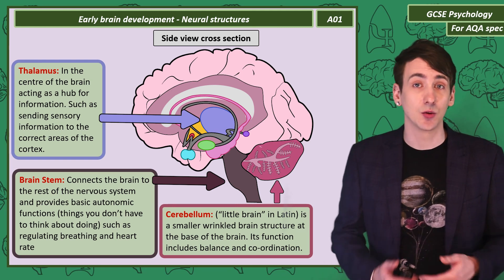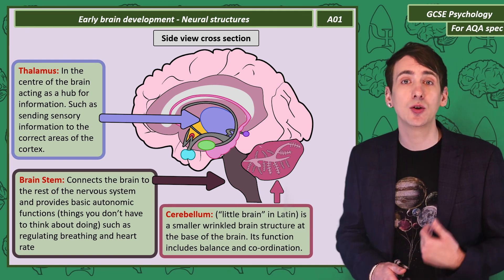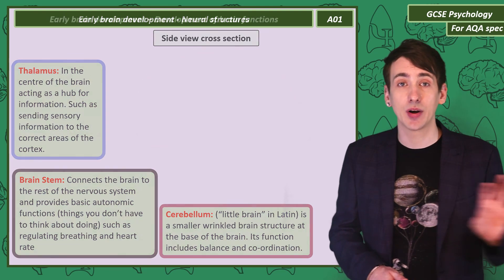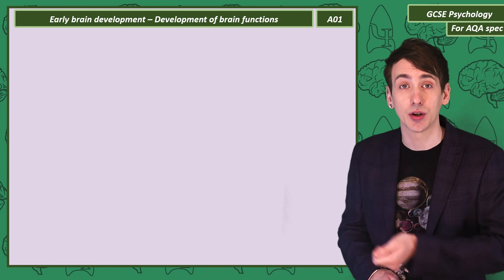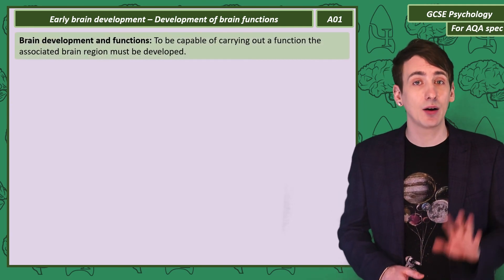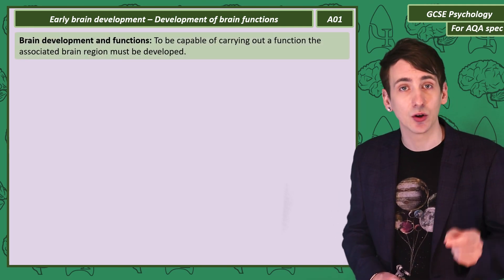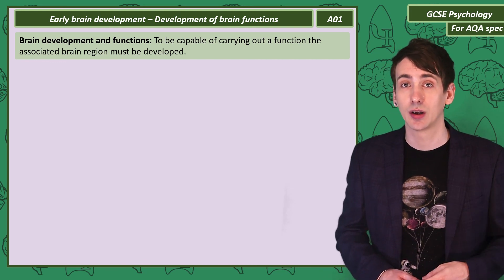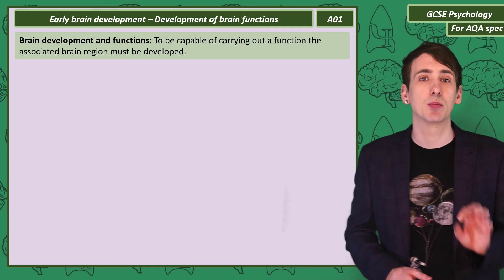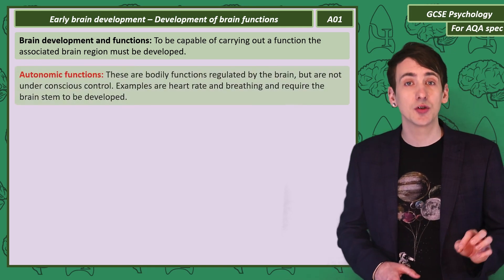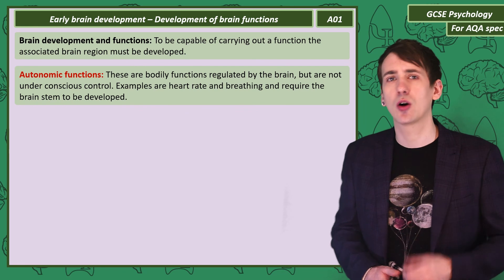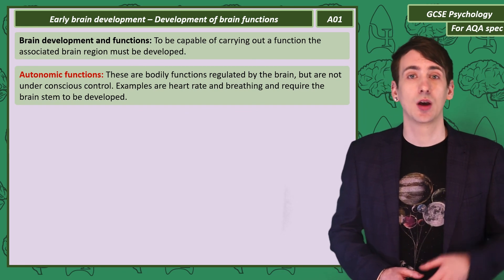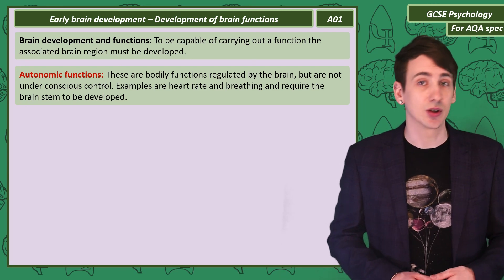That was a quick guide to early brain structure and the neural structures they develop into. We now need to clearly explain that brain development is linked to function. In order to carry out a function, the part of the brain responsible for that function needs to develop. You can be asked about four functions. Autonomic functions are controlled by the brain but not consciously — good examples are breathing and heart rate — so the brain stem needs to develop for autonomic functions.